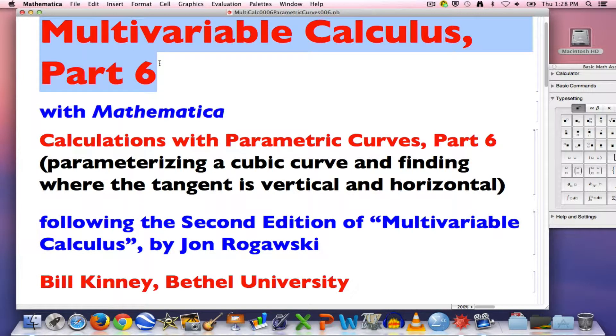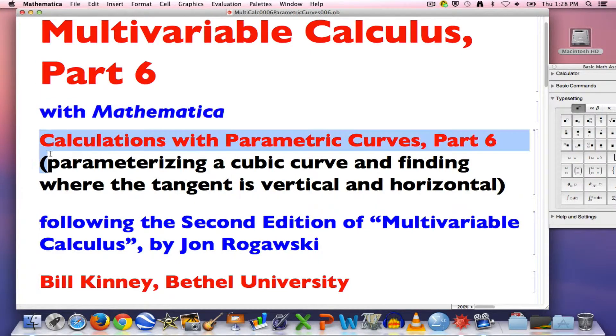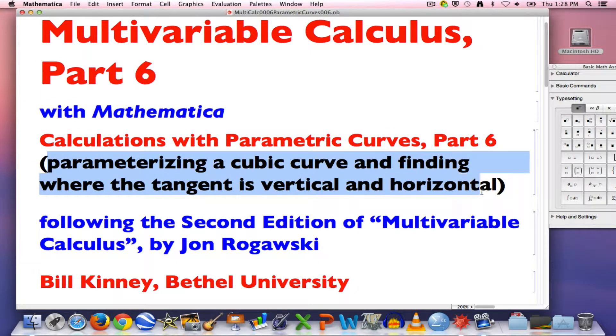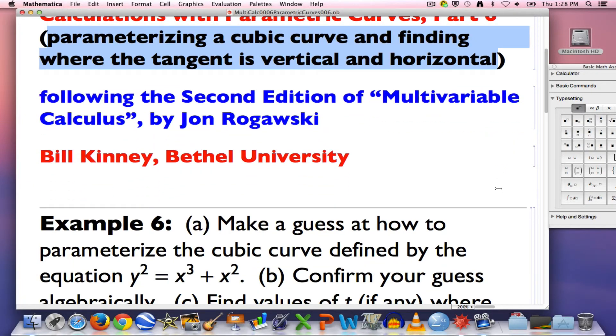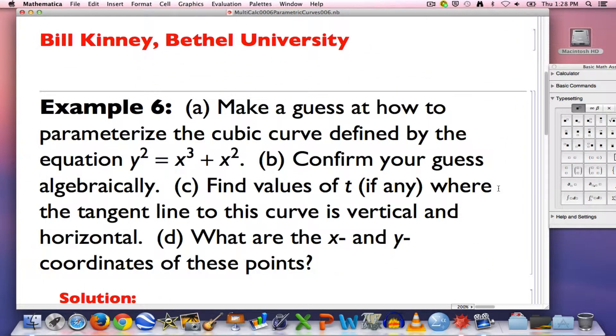This is the sixth part of a series of videos about multivariable calculus using the computer program Mathematica. It's also the sixth part of a sub-series about calculations with parametric curves. In this video we will be parametrizing a cubic curve and figuring out where the tangent line to that curve is vertical and horizontal. We'll actually be doing some calculus in this video, whereas we really haven't in the five videos to this point.